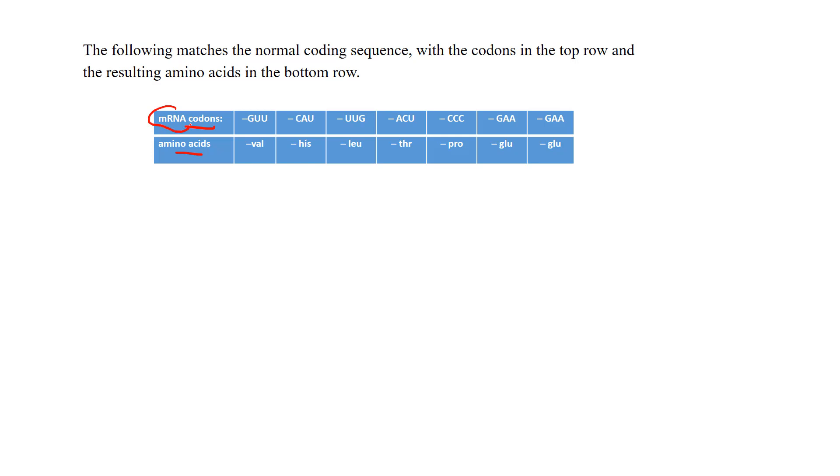This is already in messenger RNA and you always got to be careful of that. Sometimes they give you DNA and they want you to find the amino acids, you have to put it into messenger RNA. But if you have messenger RNA already you can just go and code for the amino acids just by looking at your library. This particular one though tells you the amino acids already that it's associated with.